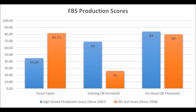Based on both of those metrics, Tyrod Taylor scored a 44.84 high school production score and an 81.73 FBS stat score. His high school production score did not hit the long-term starting threshold of 69 or higher — meaning every single long-term starting quarterback since the 2007 NFL draft class had at least a 69 or higher high school production score. Every single multiple Pro Bowl quarterback in that time span had an 84 or higher high school production score as well. So Tyrod Taylor, from the get-go, was a prospect that was a little bit more of a project coming out of high school.